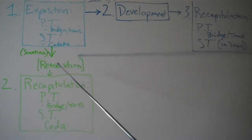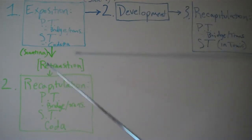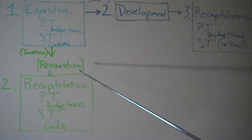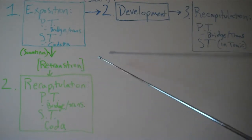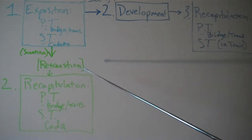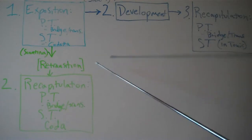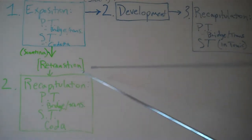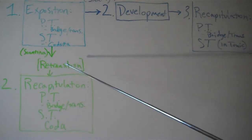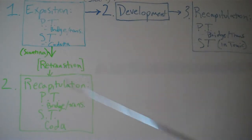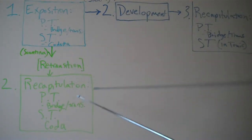The sonatina merely goes into a retransition, whose sole purpose is as a bridge between the two main sections: the exposition and the recapitulation.